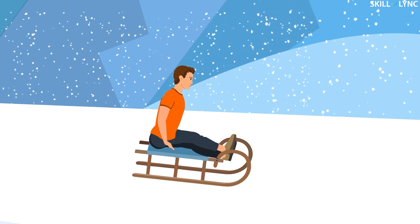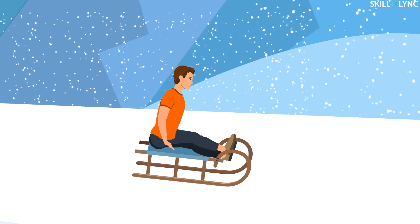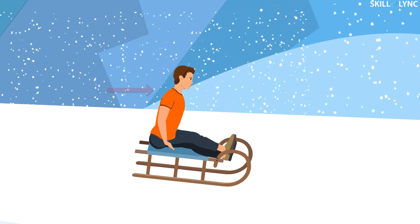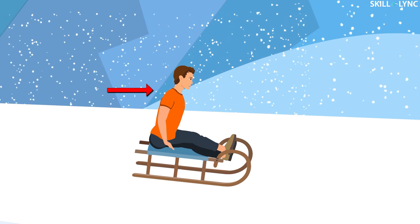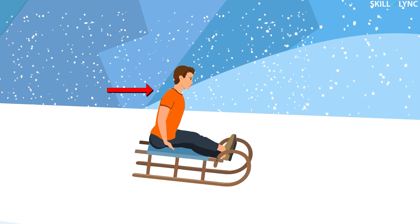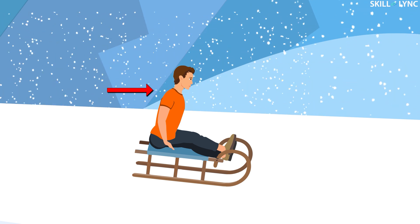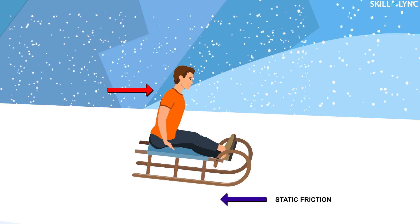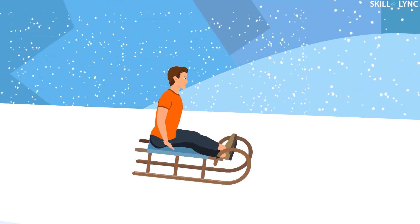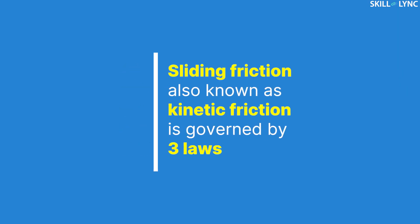This type of friction occurs when two surfaces are in contact with each other. Sliding or kinetic friction normally occurs when an object subjected to an external force overcomes the static friction and manages to move. Sliding friction, also known as kinetic friction, is governed by three laws.